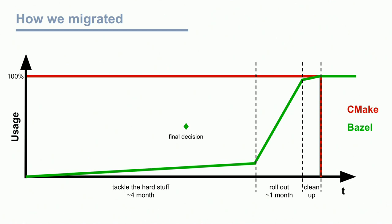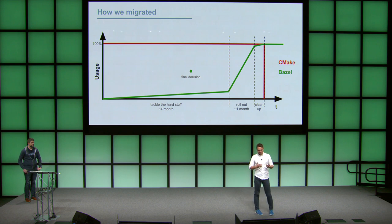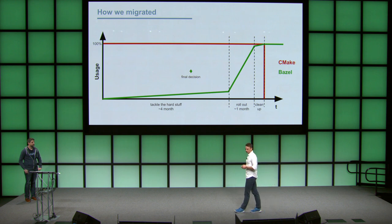Why does this approach work well? First, it's easy to sell to your management — you don't ask for a full Bazel migration at the beginning. You ask for a small team to investigate if there are any blockers. Only if you can technically prove you're likely to pull off the whole thing do you go for the final decision. It's also safe to sell for you. The other benefit is that you only need a lot of manpower for a short period — the rollout phase. By the time developers encounter Bazel for the first time, you already have a team of Bazel experts who've worked with it in-depth for months — a great learning resource for everyone.